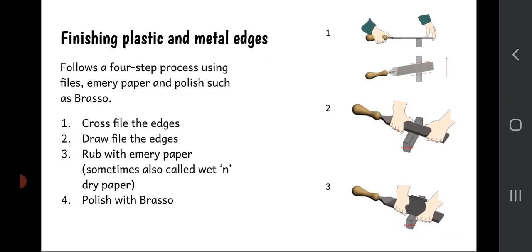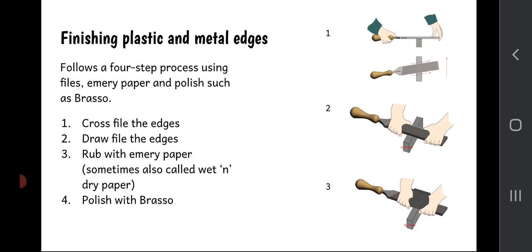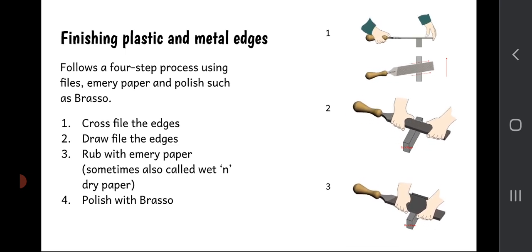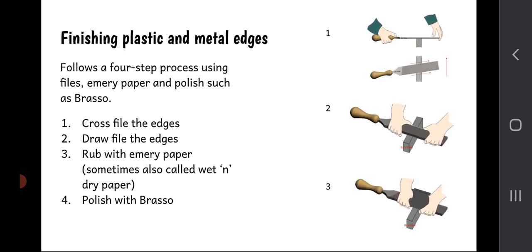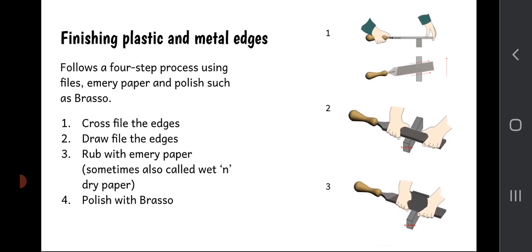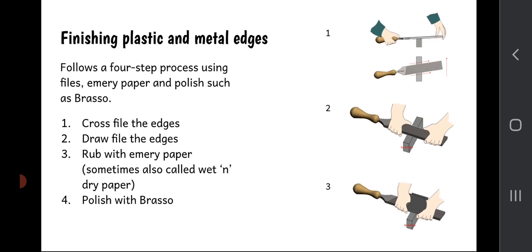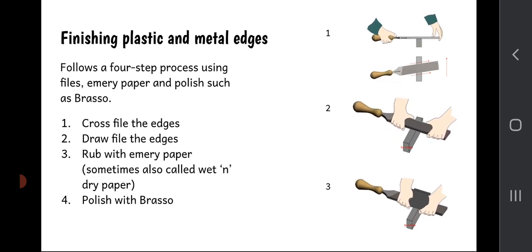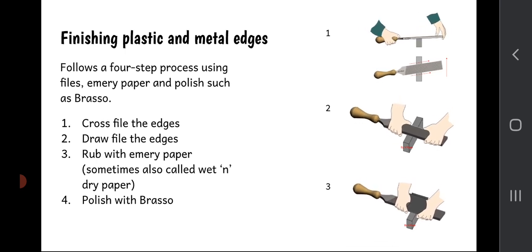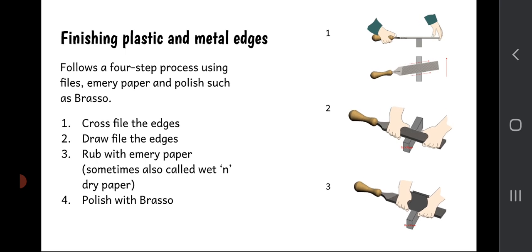On plastic and metal edges, the technique and tools are a little different. We tend to use files and something called wet and dry paper or emery paper, and it's a four-step process. First, you would cross file the edges, then draw file it by drawing the file along the edges. Then rub with emery paper or wet and dry paper, and the final fourth step is to polish the edge with something like Brasso.